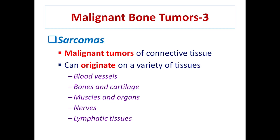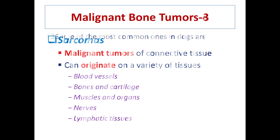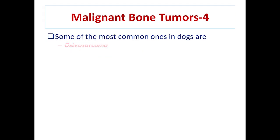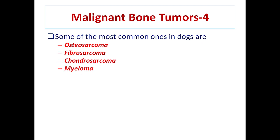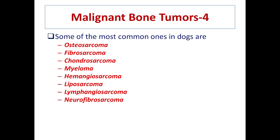Sarcomas are malignant tumors of connective tissue that may originate in a variety of tissues such as blood vessels, bones, cartilage, muscles, organs, nerves, and lymphatic tissues. All structures containing connective tissue are prone to sarcomas. The most common malignant tumors include osteosarcoma, fibrosarcoma, chondrosarcoma, myeloma, hemangiosarcoma, liposarcoma, lymphangiosarcoma, and neurofibrosarcoma.